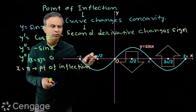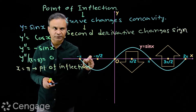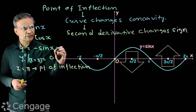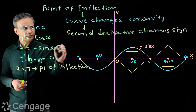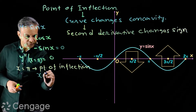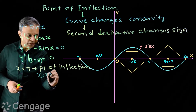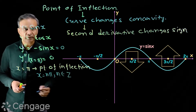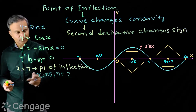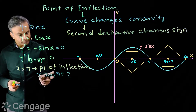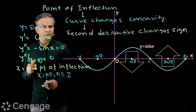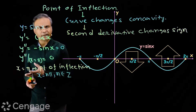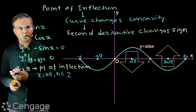There will be an infinite number of points of inflection for y = sin x, because the second derivative vanishes at x = nπ where n belongs to the set of integers. So we have infinitely many solutions: x = 0, π, 2π, 3π, −π, −2π, and so on.